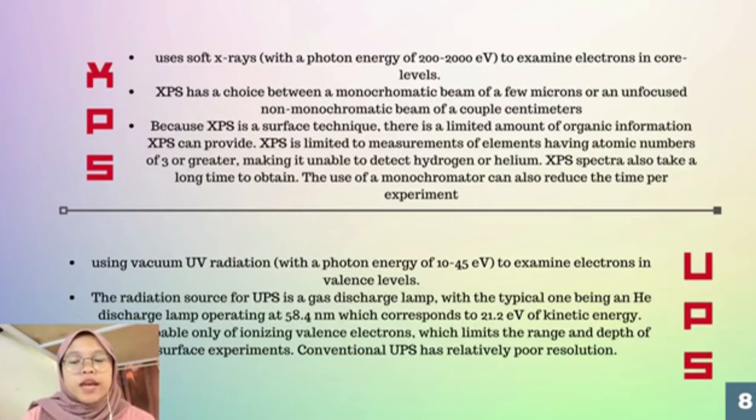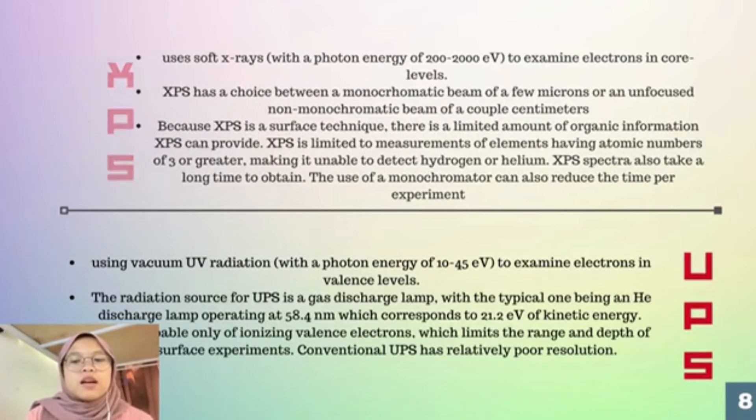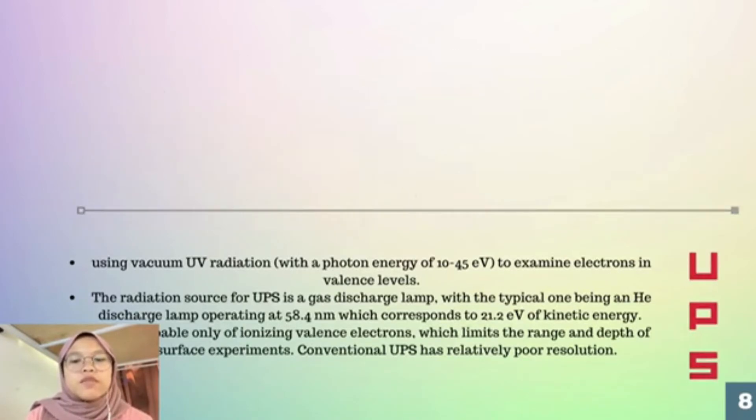The limitations for UPS: UPS is capable only of ionizing valence electrons, which limits the range and depth of the UPS surface experiment. Conventional UPS has relatively poor resolution.